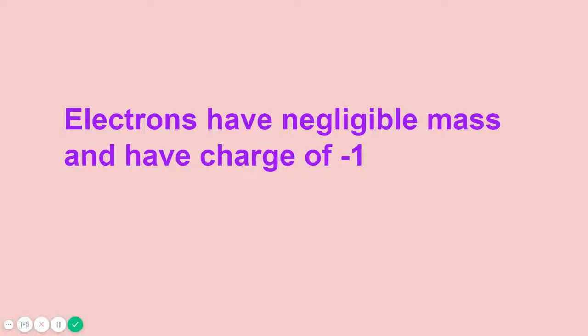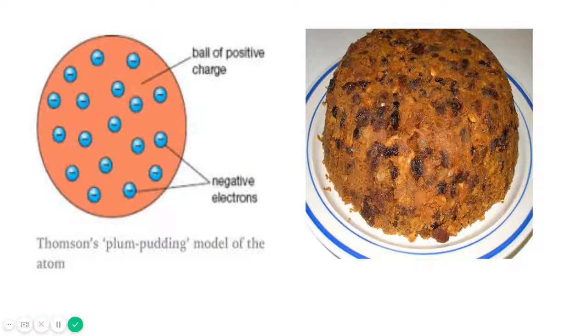Electrons have negligible mass and have a charge of minus one. These discoveries made scientists believe that atoms are divisible and made up of electrons and protons, but they didn't know at the time how these electrons and protons are arranged in an atom. They tried to understand these arrangements through various experiments. So J.J. Thomson, through various experiments, was the first one to put forward a model to explain the structure of an atom.